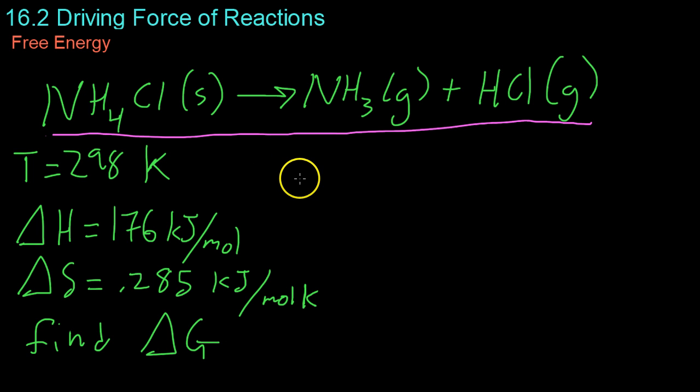So, what we first do is set up our Gibbs free energy equation. So, delta G equals delta H minus the temperature in Kelvins times the change in entropy. And because we're given all this information, it's basically just a plug and chug.